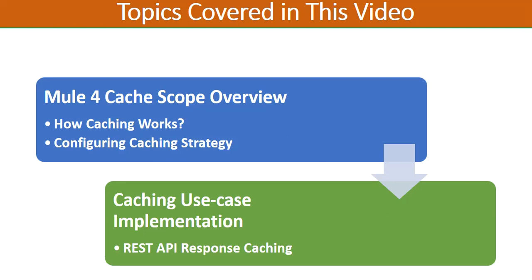That's possible using caching strategies. If we use caching in Mule 4 we have to configure a caching strategy. There are different caching strategy options available — the default option is an in-memory object store. What happens is that the responses for certain key-value pairs will be cached in that in-memory object store, and requests will be served from that in-memory cache.